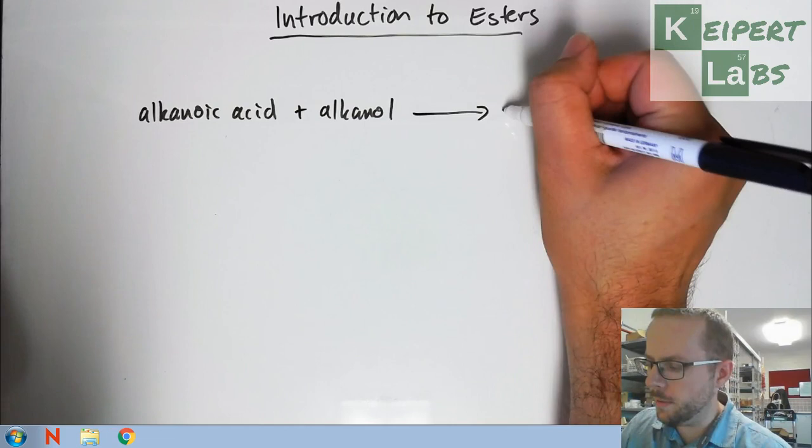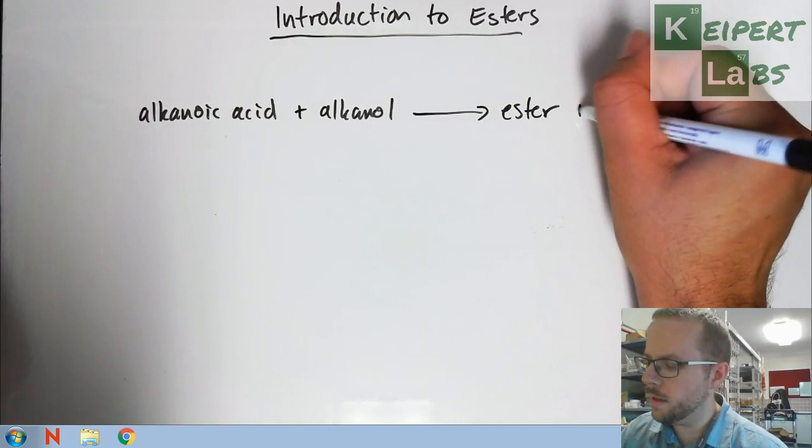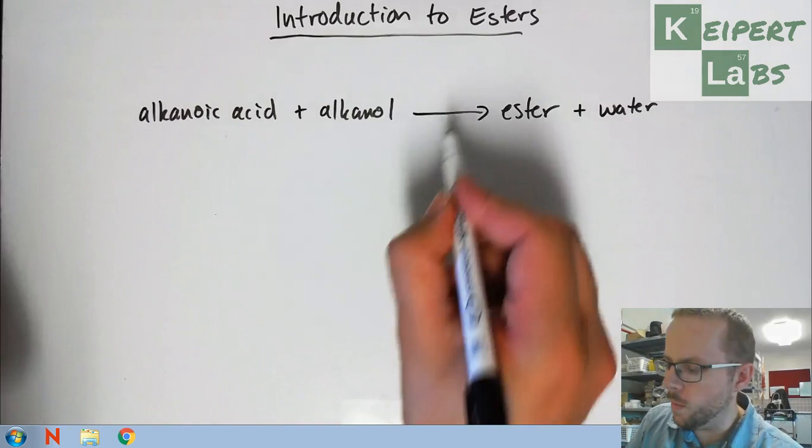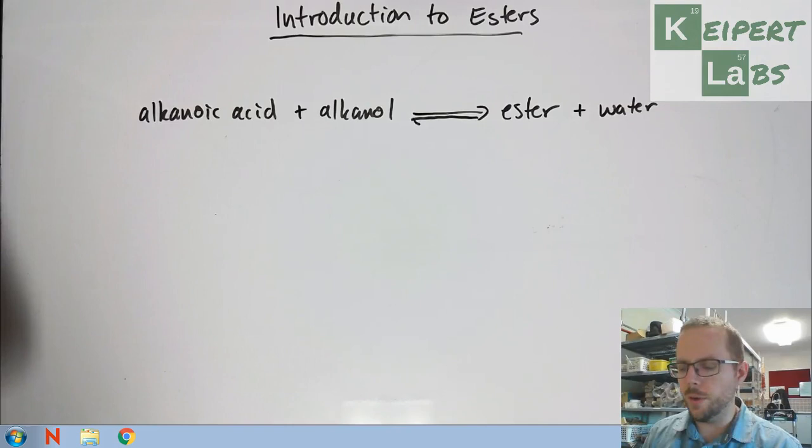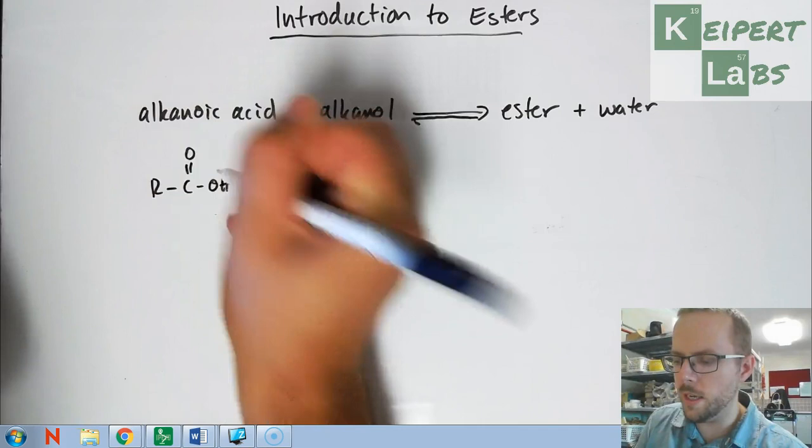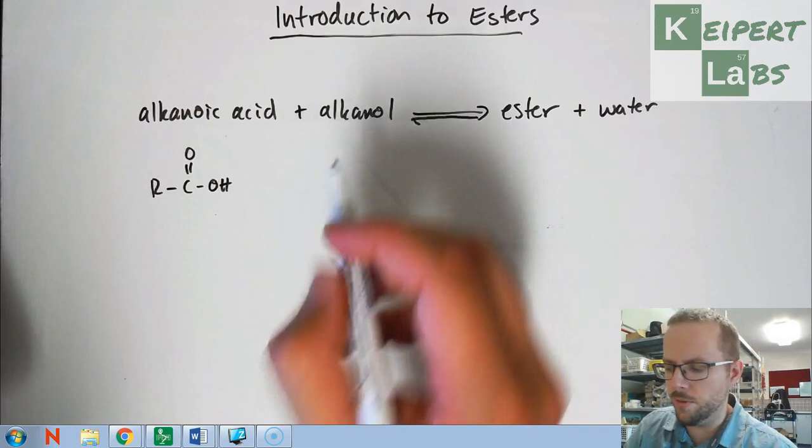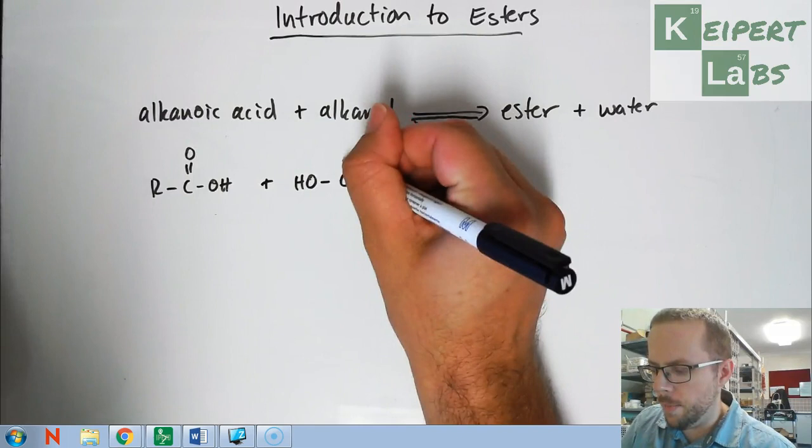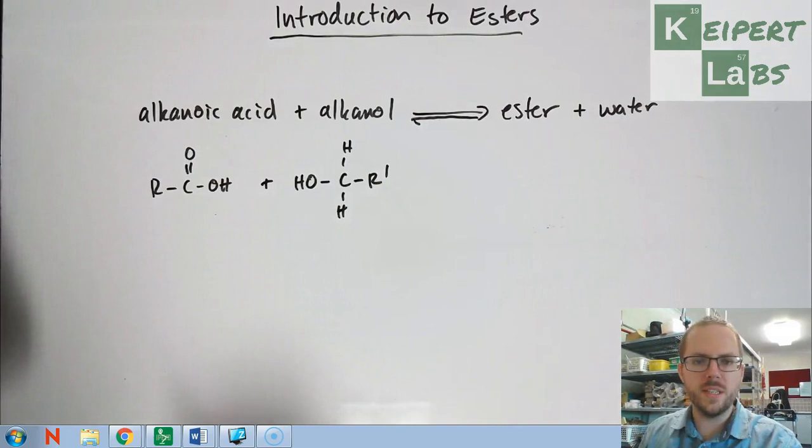When an alkanoic acid and an alkanol react we form an ester plus water, and I'm also going to show you that it's an equilibrium reaction. So if for example, let's say I've got a compound which is an alkanoic acid, so it's got some kind of group over here, maybe it's many carbons, maybe it's a hydrogen or something in between.